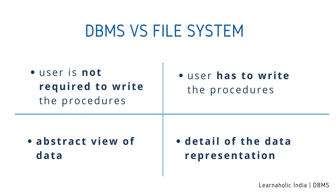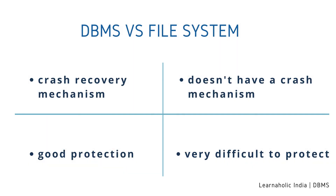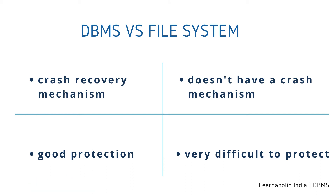Third: DBMS provides a crash recovery mechanism — it protects the user from system failure — whereas a file system doesn't have a crash recovery mechanism, meaning if the system crashes while entering data, the content of the file will be lost. Fourth: DBMS provides a good protection mechanism, whereas it is very difficult to protect a file under the file system.